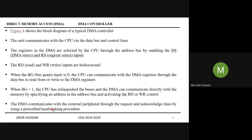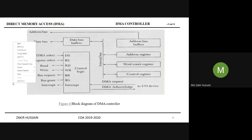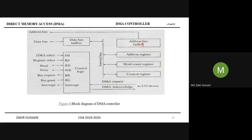The DMA communicates with external peripherals through request and acknowledge lines using a prescribed handshaking procedure. The handshaking signals are DMA request and DMA acknowledge - these two are the handshaking signals. The DMA controller has three registers: the address register, word count register, and control register. These registers are there in the DMA controller. CPU communicates with the DMA via data and control lines. The registers in the DMA are selected by the CPU through the address bus by enabling DS and RS.